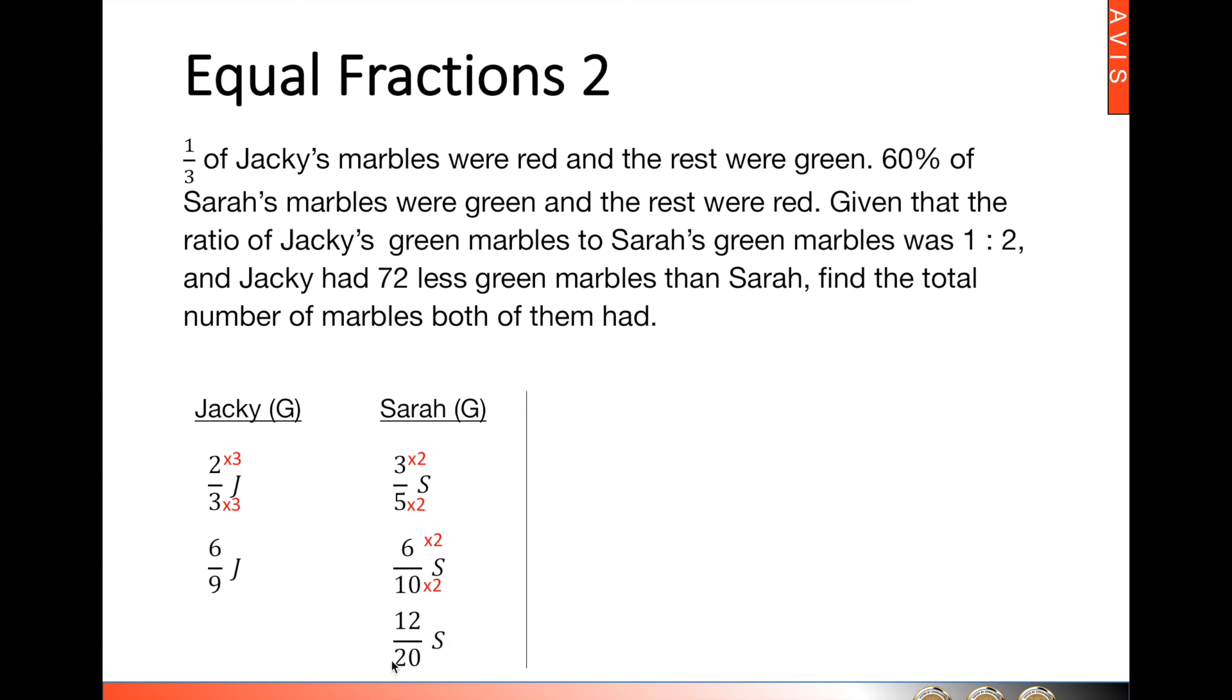What this means is that Sarah actually had twenty units of marbles, of which twelve are green. And Jackie, she had nine units of marbles, of which six are green. So the denominator shows the total units and the numerator shows what's green.